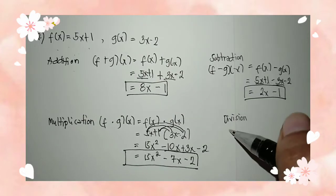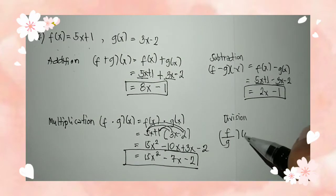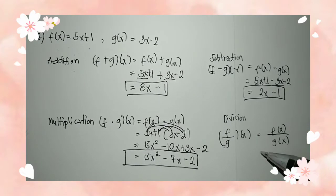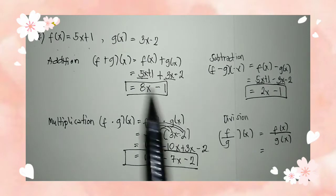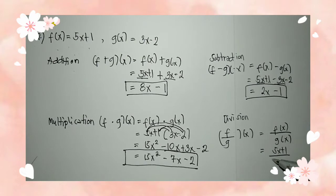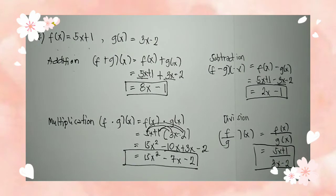Moving on to division. We have f divided by g of x is equal to f of x divided by g of x. So we have f of x equal to 5x plus 1 over 3x minus 2. Since we can no longer simplify it, that is already the correct answer.